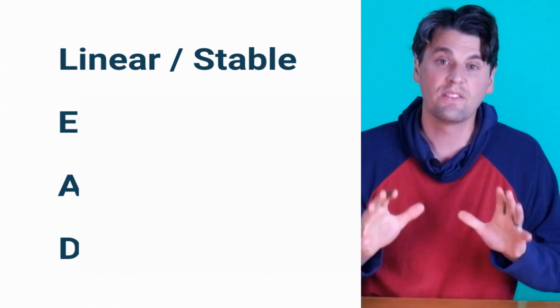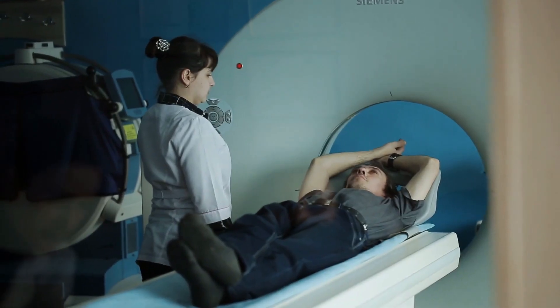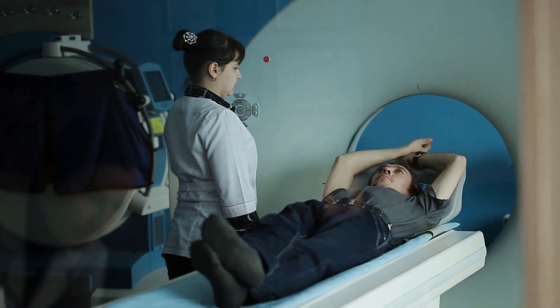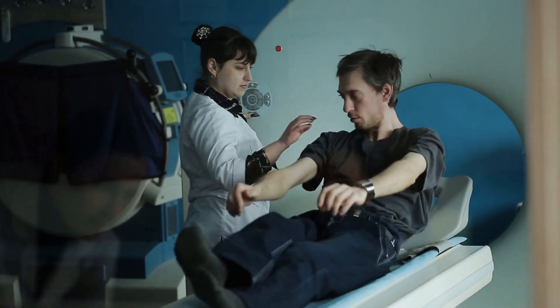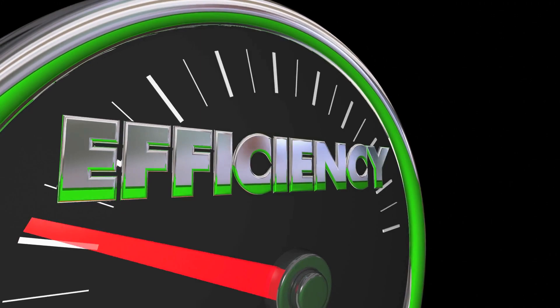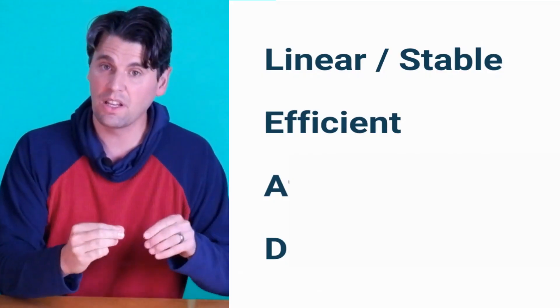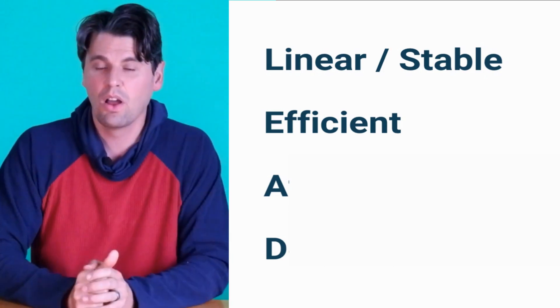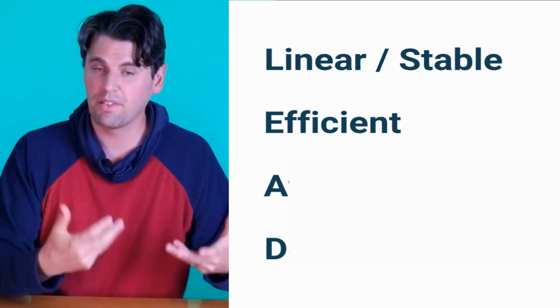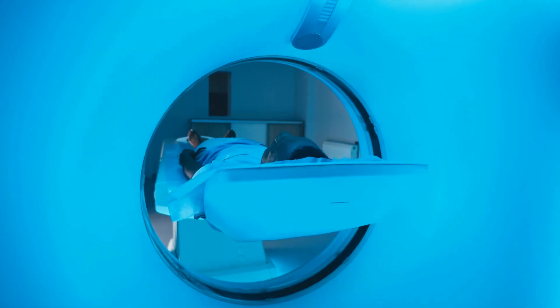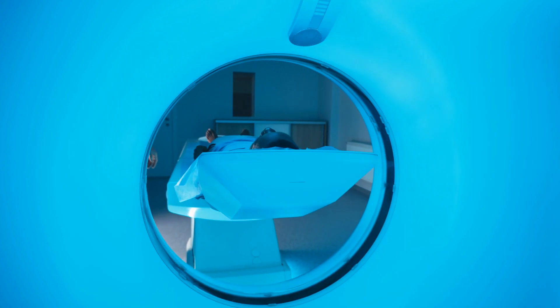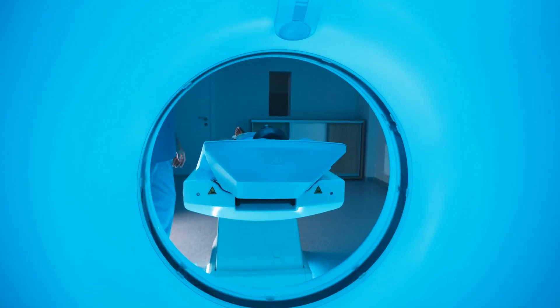We also want the detector to be stable. CT is used as bread-and-butter imaging and we want stable, dependable imaging over time. E is for efficient — we'd like the system to efficiently convert x-ray energy into a measured signal. If the system is relatively inefficient, there's dose going through the patient that isn't being measured on our detector.